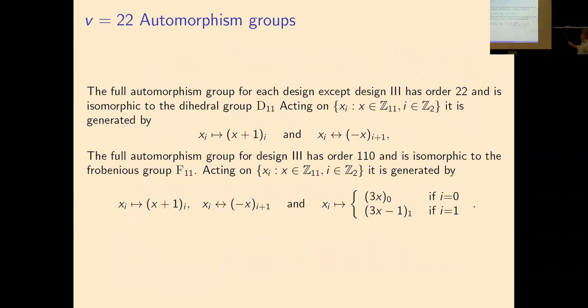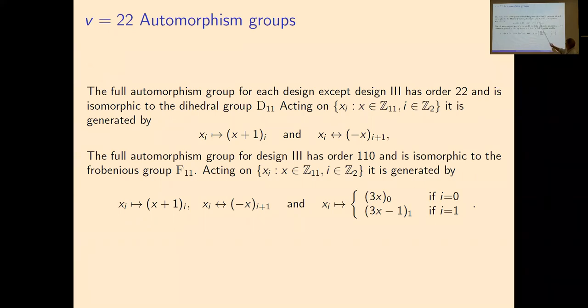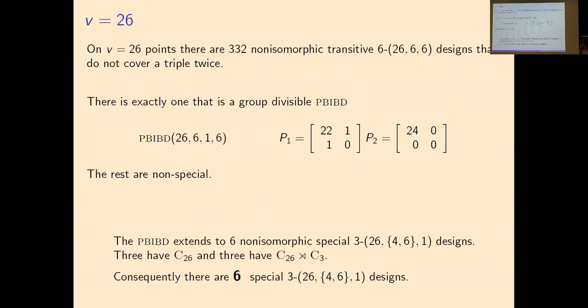The full automorphism groups are for all of them, except for design number three, which is one of the symmetric biplane ones, the third one, have the dihedral group. The other one, a bit larger, has the Frobenius group on 11 points, of degree 11. So it's generated by that.